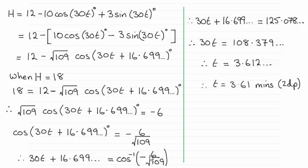When you take the inverse cosine of minus six over root 109, make sure you're in degrees mode. You should find you get 125.078 and so on.